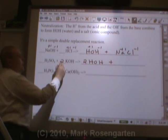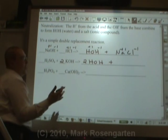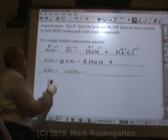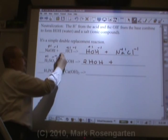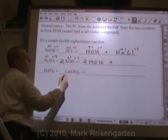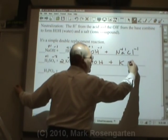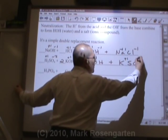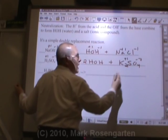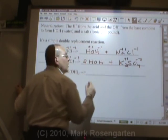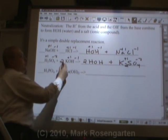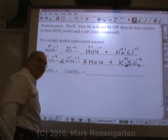Plus, well, because it's double replacement again, the charges remain the same. Plus one, minus two, plus one, minus one. We're going to get K and SO4, plus one, minus two. Well, that's the formula, right? So, therefore, oh, look at that. It's balanced. Two Ks, two Ks. Isn't that nice?